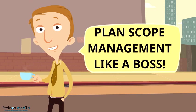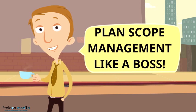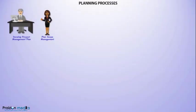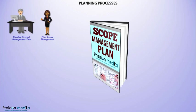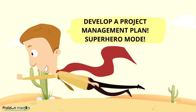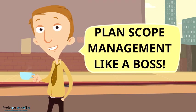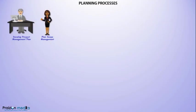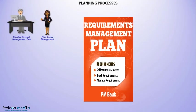The next process takes us to the Scope Management Knowledge Area, and this process is called Plan Scope Management. Plan Scope Management is where the Scope Management Plan is developed — it defines how to manage scope, how scope will be fleshed out in defining the scope, and how to create a WBS. Also from this process we get an output known as the Requirements Management Plan.